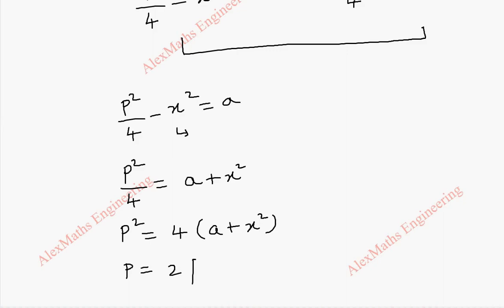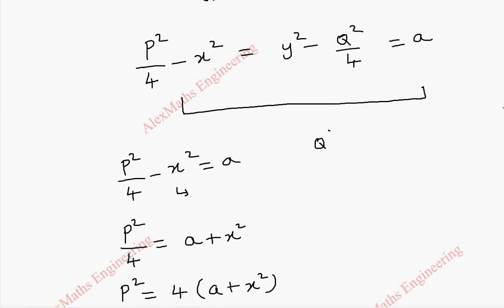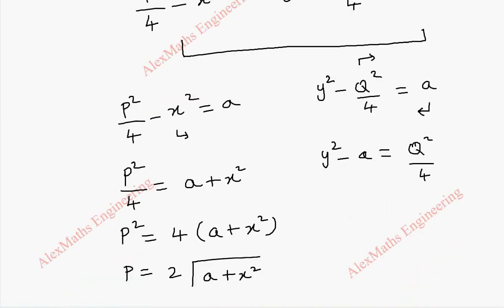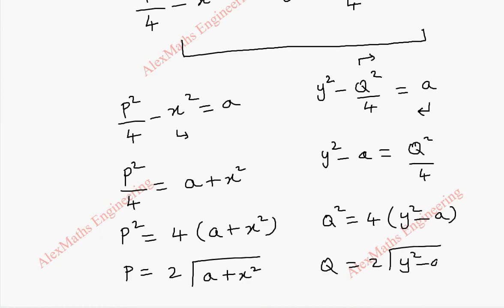So P equals 2 root of a plus x squared. In the same way, we have y squared minus Q squared by 4 equal to a. Bringing terms across: y squared minus a equals Q squared by 4, so Q squared equals 4 into y squared minus a. And hence Q equals 2 root of y squared minus a.